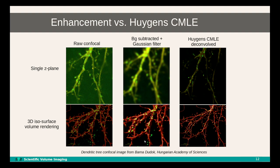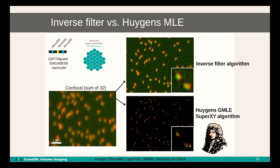With Huygens CMLE, the image is de-blurred, noise is removed, and the objects are restored all at the same time. In fact, Huygens CMLE is even able to boost the resolution. This enables you to restore spatial details that would never be possible in the raw, noisy data.